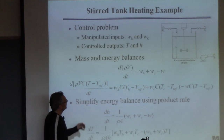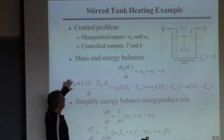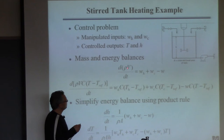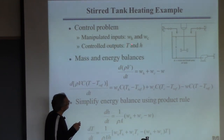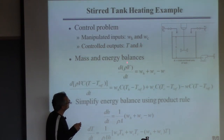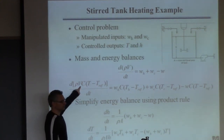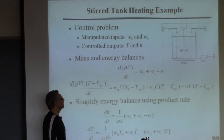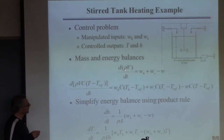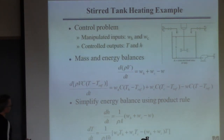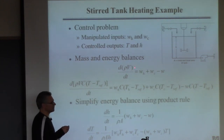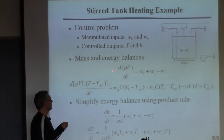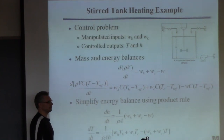I want two differential equations for the two things I want to control: one for level from the mass balance, one for temperature from the energy balance. For the mass balance: assuming constant density ρ and a cylindrical tank where volume equals A times H, you pull out ρ and A and divide through to get dH/dt.